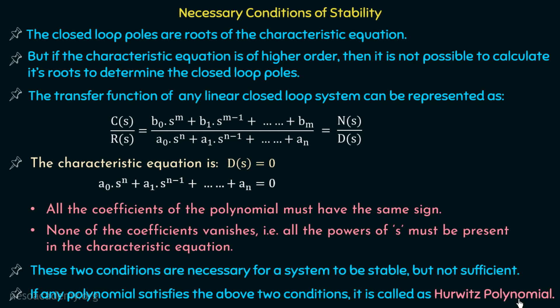If any polynomial satisfies the above two necessary conditions, it is called a Hurwitz polynomial. If a characteristic polynomial is not a Hurwitz polynomial, we can directly say the system is unstable. But if it satisfies both necessary conditions — i.e., it is a Hurwitz polynomial — we need to further check for the sufficient conditions of stability by applying the Routh test.